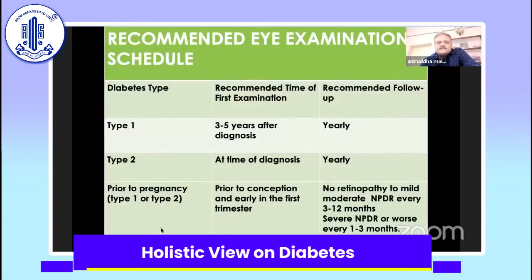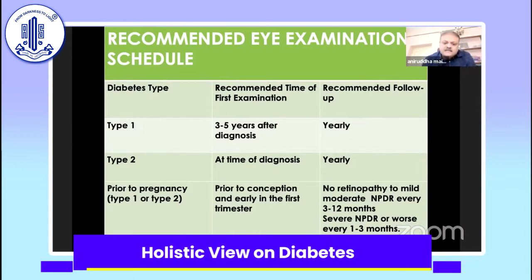Regarding the recommended eye examination schedule: when type 1 diabetes is diagnosed, examination should begin at least after 3 to 5 years, with a recommended follow-up of at least once a year. For type 2 diabetes, examination should occur at the time of diagnosis and yearly thereafter. Definitely, the schedule changes depending on the stage of diabetic retinopathy detected.